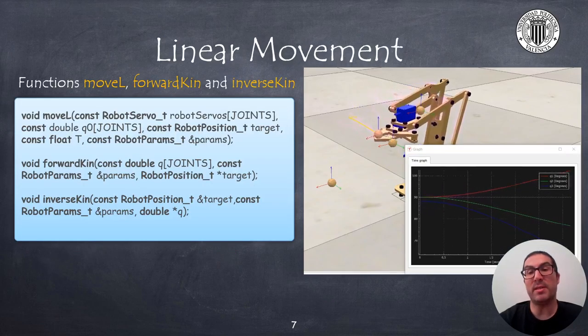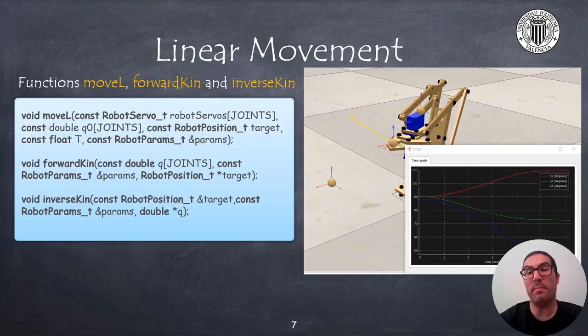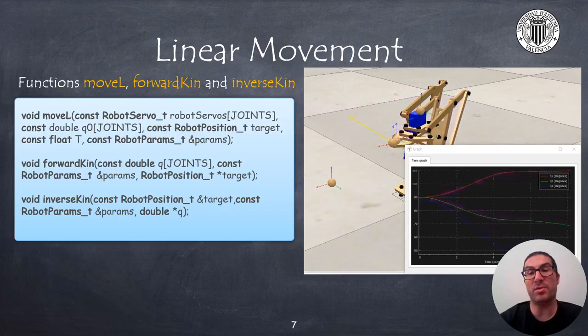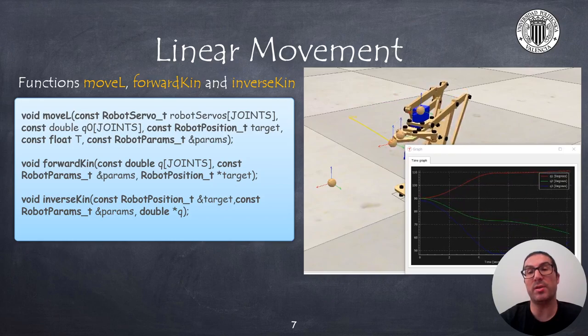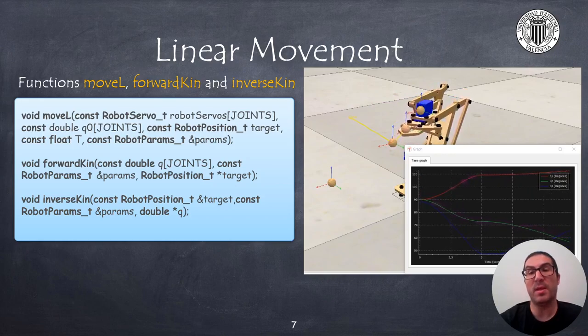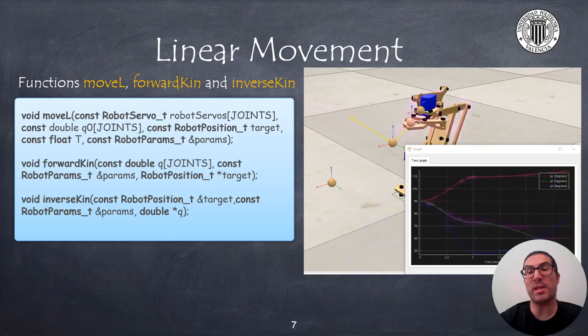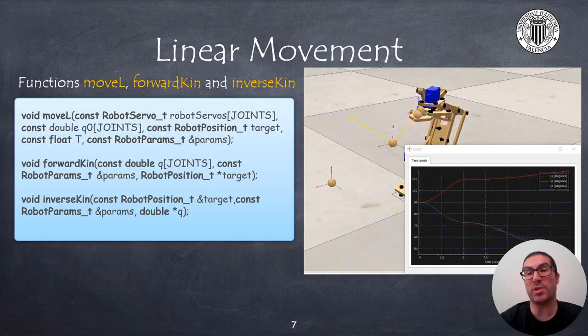To implement a linear movement in the Cartesian space, I propose to implement the moveL function, equivalent to the instruction under the same name in Rapid. The video on the right shows an example of how it should work this instruction.